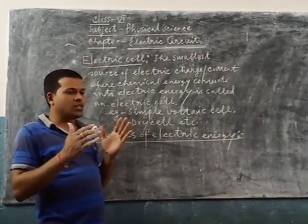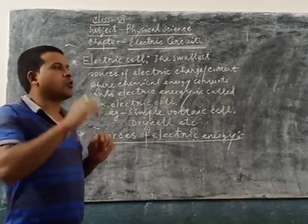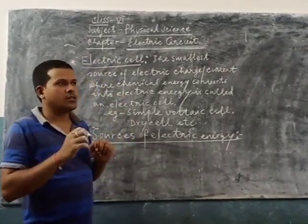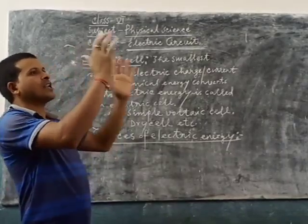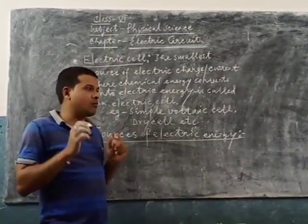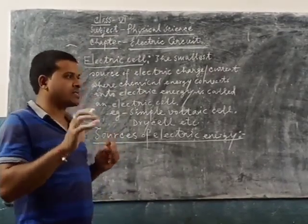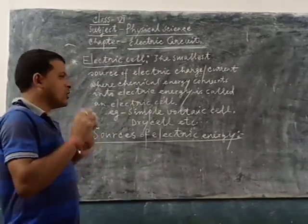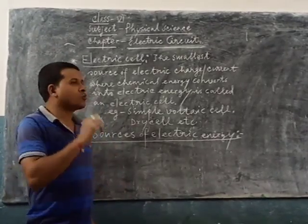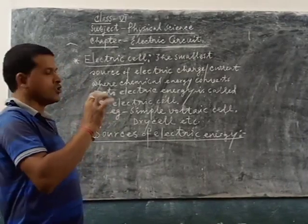But also, for the larger type of electrical devices, for the electronic toy or for the wall clock, here a larger, bigger electric energy source is necessary. That is why we use a number of electric cells together to run electrical devices larger than the wristwatch.